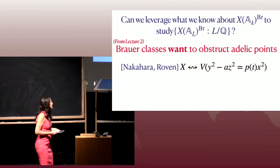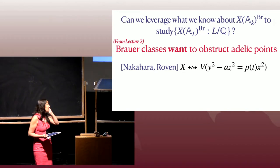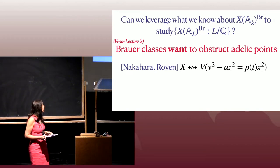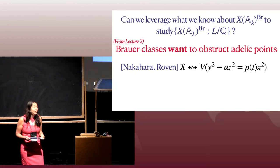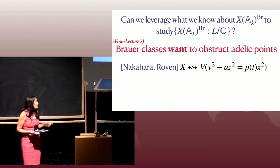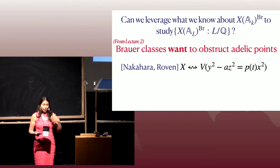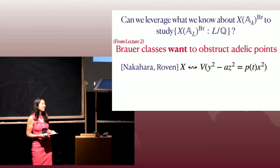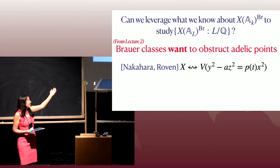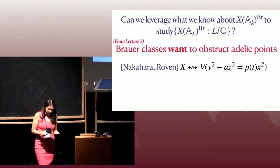Another very recent result, just on the archive this summer, is by Masahiro Nakahara and Sam Rovin. Nakahara appeared at the end of the last talk when we were talking about capturing Brauer-Manin obstructions — he's my postdoc and on the job market in the fall. This is an example of a Châtelet surface. They study these Châtelet surfaces.